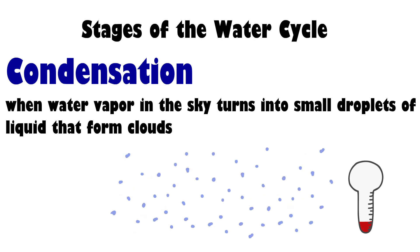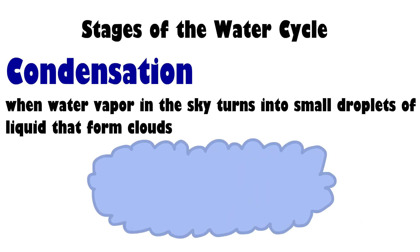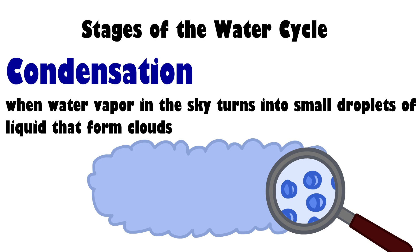The cold air causes the water vapor to change back into small liquid water droplets. These small droplets come together to form clouds. From the ground, clouds might look like big fluffy pillows, but they are actually big groups of water in the sky.